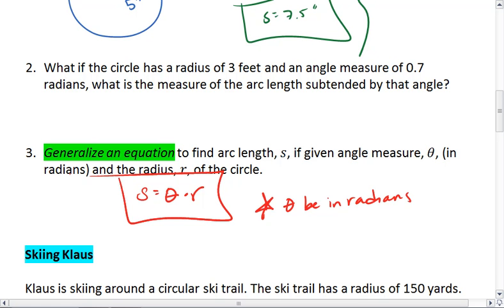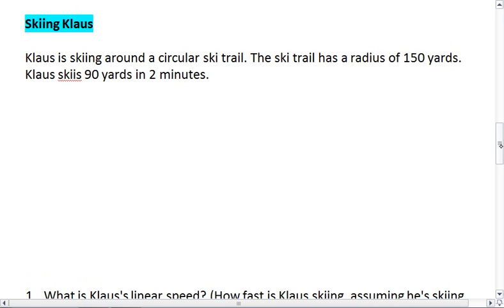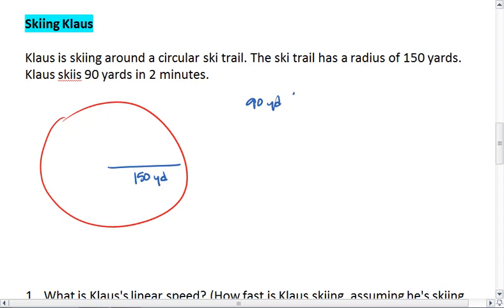Alright, let's look at an example. We have skiing Klaus. Klaus is skiing around a circular ski trail. Do not question the feasibility or practicality. The ski trail has a radius of 150 yards. Klaus skis 90 yards in 2 minutes.